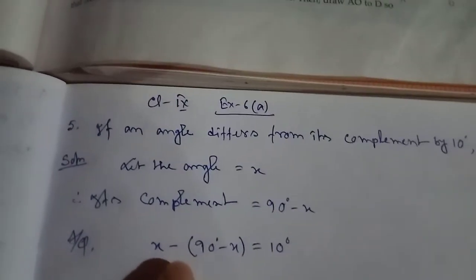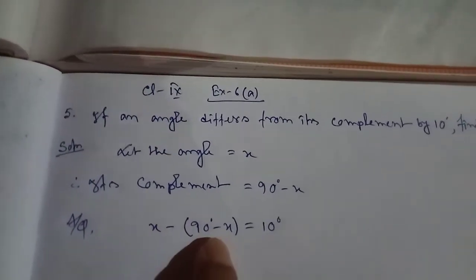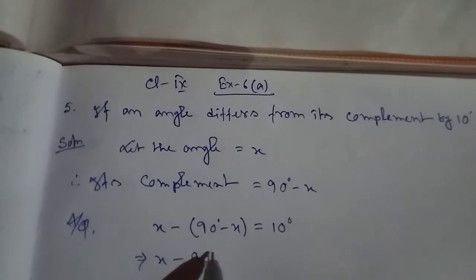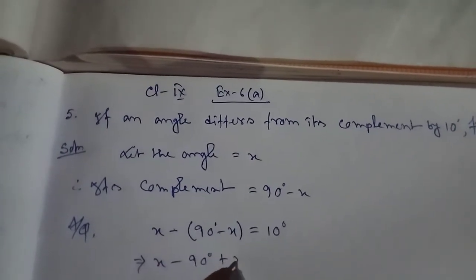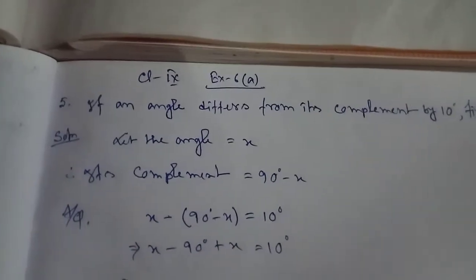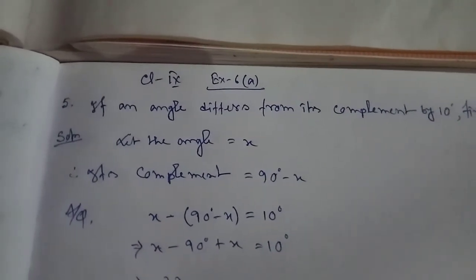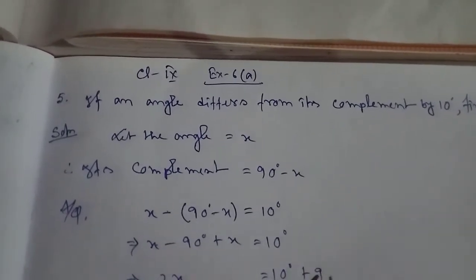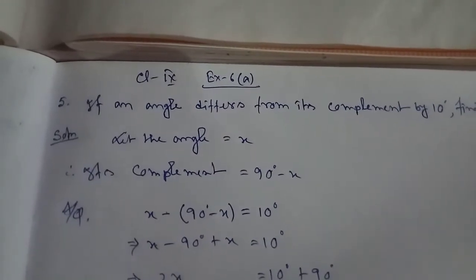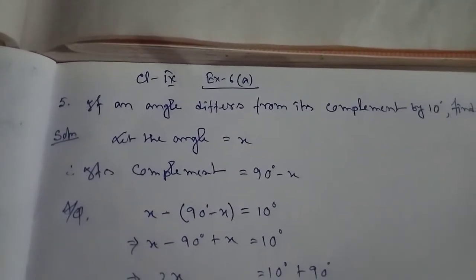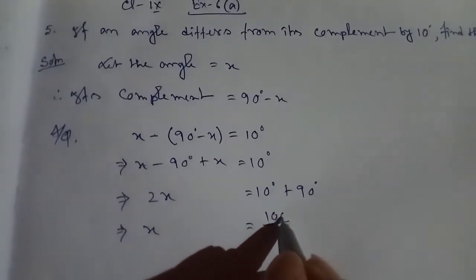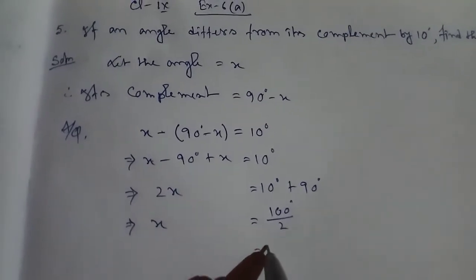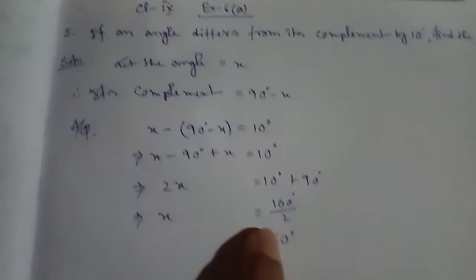The difference between the angle and its complement is 10 degrees. So x minus (90 minus x) equals 10 degrees. The minus and minus becomes plus, giving x plus x, which is 2x, equal to 10 plus 90, which is 100 degrees. Dividing by 2 gives x equal to 50 degrees.